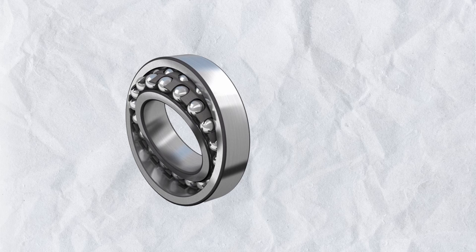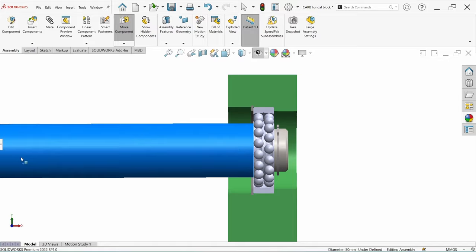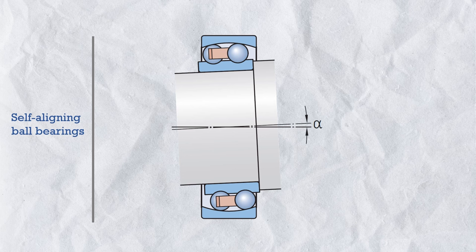The second bearing is the self-aligning ball bearing. It has two rows of balls with a common sphered raceway in the outer ring, and two deep uninterrupted raceways in the inner ring. The key feature is insensitivity to angular misalignment of the shaft up to a certain angle, accommodating both static and dynamic misalignment. This bearing performs best at high speed and low noise applications.